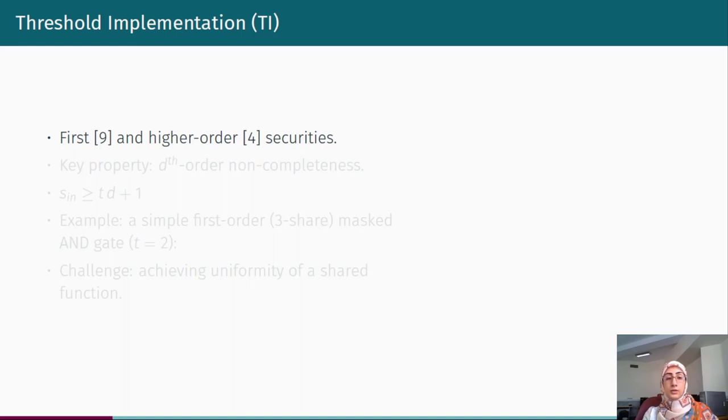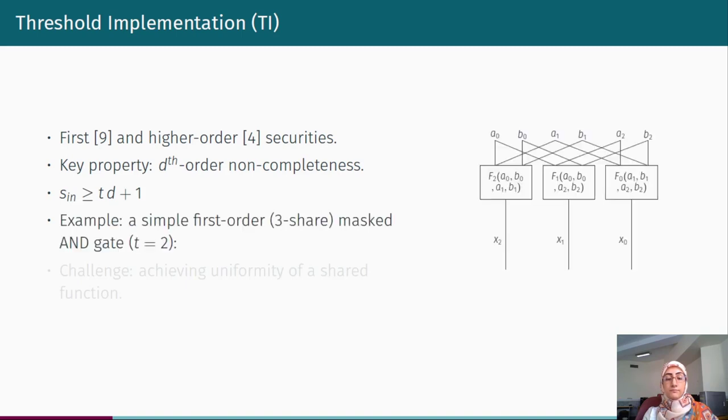However, the key property of a d-th order threshold implementation is d-th order non-completeness, which necessitates td plus 1 as the minimum number of input shares, where t is the algebraic degree of the shared function. Here we have an example which is first-order threshold implementation of an AND gate. According to the above formula for the minimum boundary of the input shares, each input has been split into three shares.